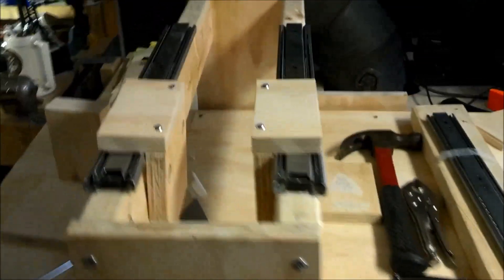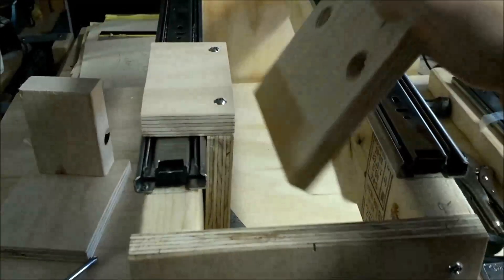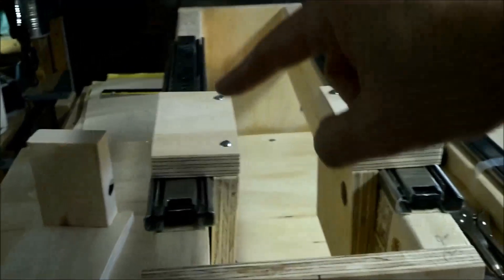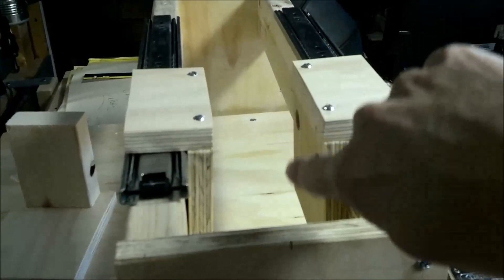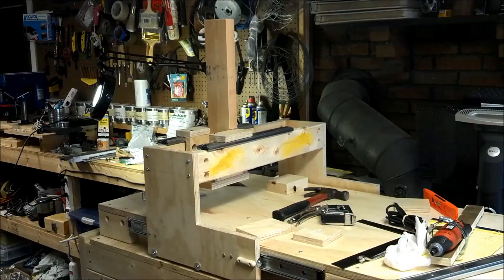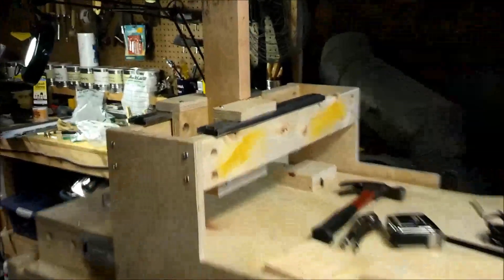These are the two independent sides. So these roll on that drawer slide track and then we're going to build the bottom next. This is the Z-axis slowly coming together.